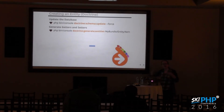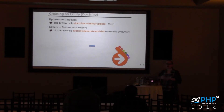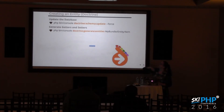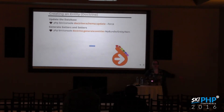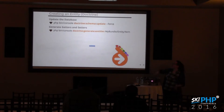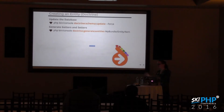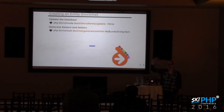Once you have entities defined, run these command line commands: 'php bin/console doctrine:schema:update --force' will examine all your annotated entities and create a database that matches what you've described. 'php bin/console doctrine:generate:entities BundleName:EntityName' generates getters and setters for that specific entity. If you leave off the specific entity name, it generates getters and setters for everything in the directory. It is safe to run — it won't override custom code.